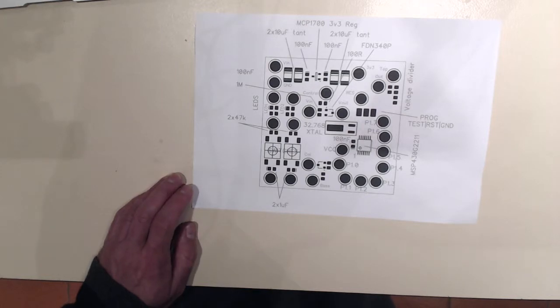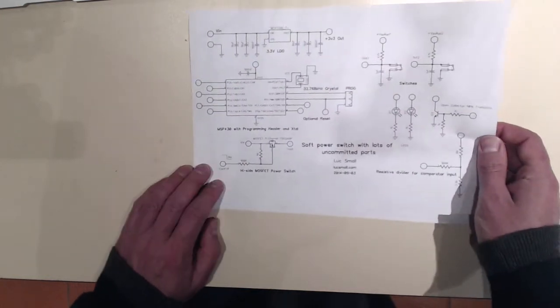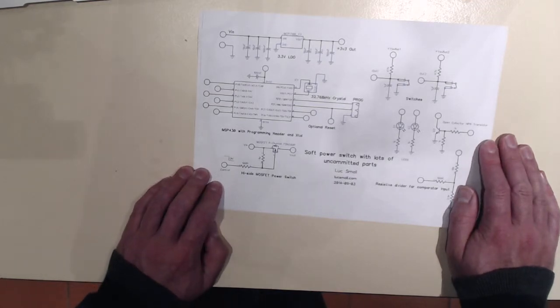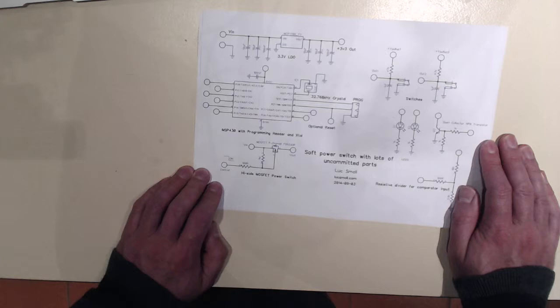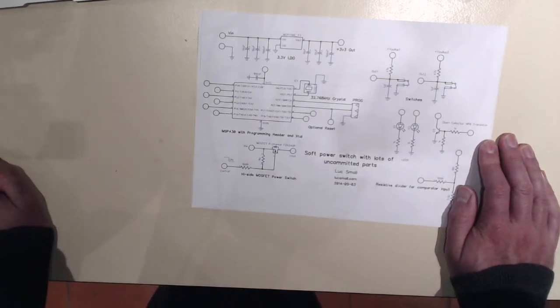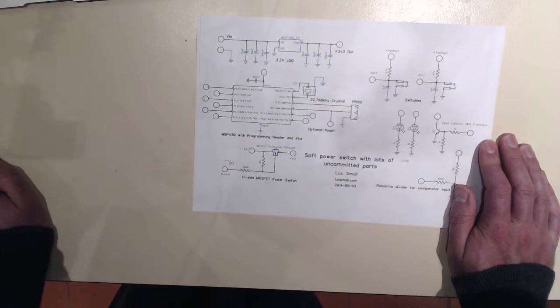So here's the schematic for that same board. I should say that that board was designed to be really easy to produce at home using the toner transfer method. So there's no holes in it to be drilled or anything like that. Really simple thing to etch at home and then start working with.